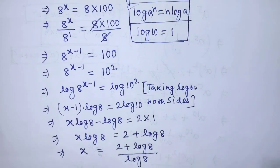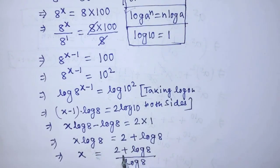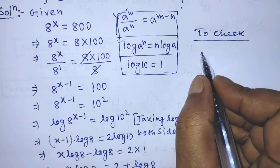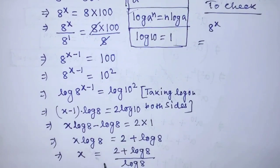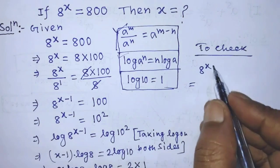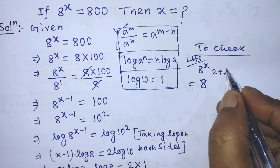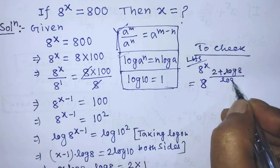To check this solution, we put the value of x equal to (2 plus log of 8) over log of 8 on the left hand side of the given equation. The left hand side of the given equation is 8 to the power x. Putting the value of x, we can write: 8 to the power (2 plus log of 8) over log of 8.